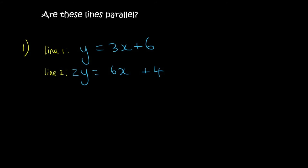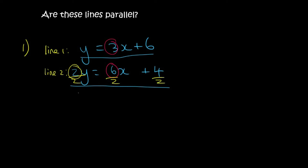Now we're going to practice a few questions. Number one: Line 1 is given to us like this, Line 2 is given like this. Are they parallel? Some of you might say no straight away because the numbers are different. But the bottom equation is not written in standard form — the y still has a 2 in front of it. So the correct thing is to get y by itself first by dividing everything by 2. We end up with y equals 3x plus 2. So this line has a gradient of 3, which is the same as the top line. Yes, these lines are parallel.